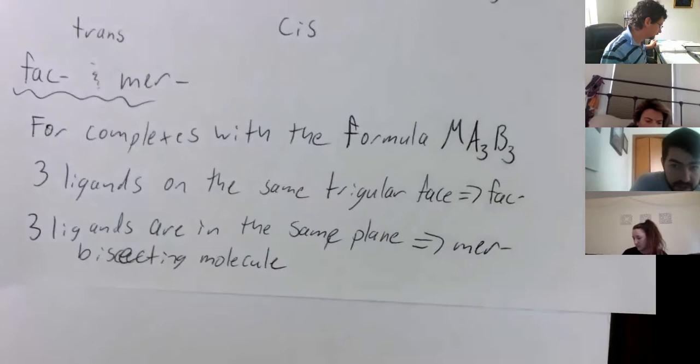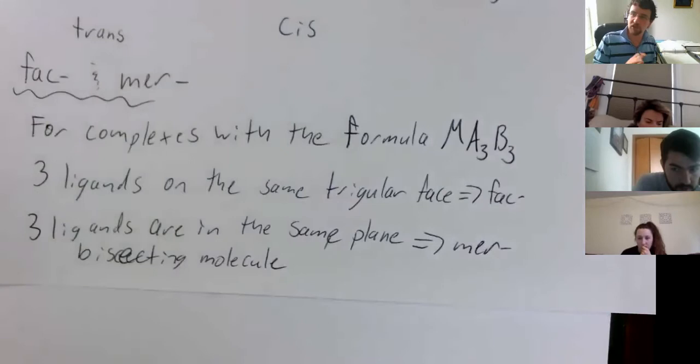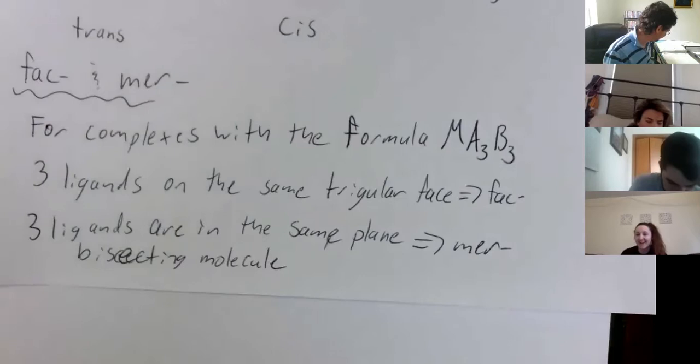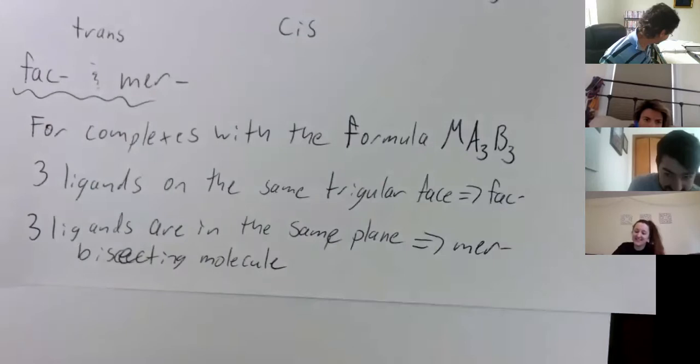The formula is MA₃B₃ — that M stands for generic metal, not bridging. Sorry, my M's look a little mu-like. And we're coming up with new adjectives apparently.